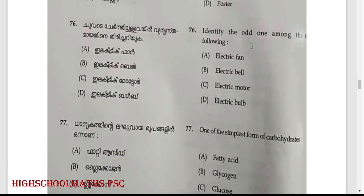Identify the odd one among the following: electric fan, electric bell, electric motor, electric bulb. Electric bulb is the answer.